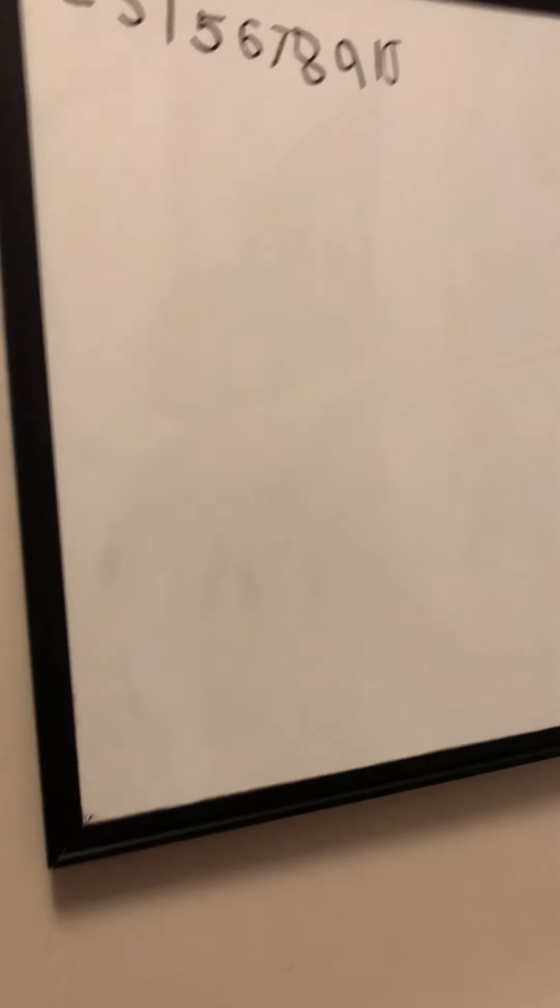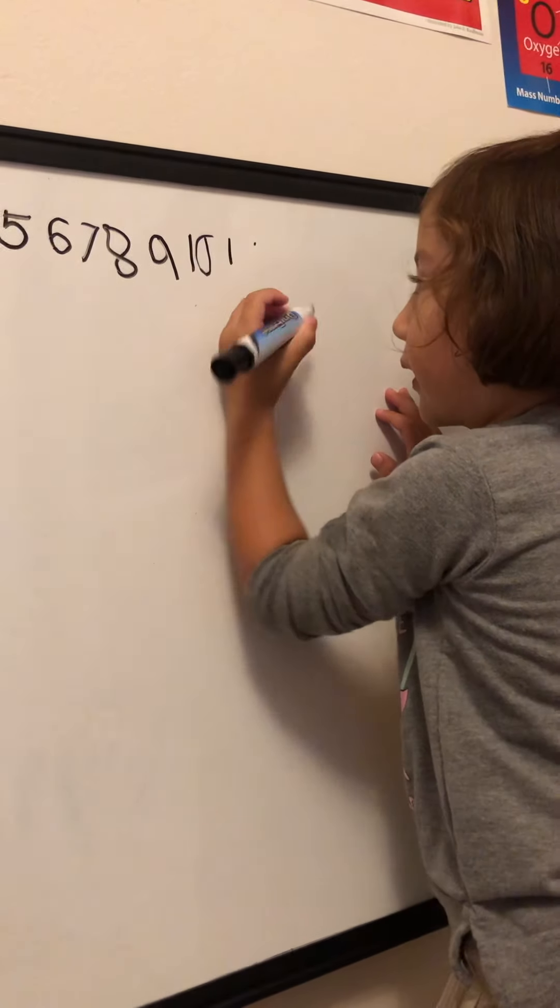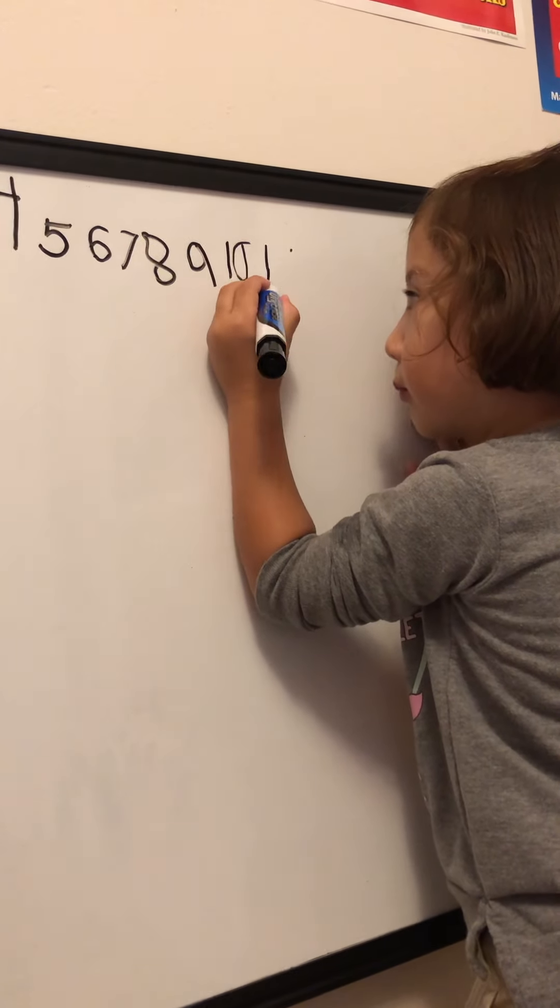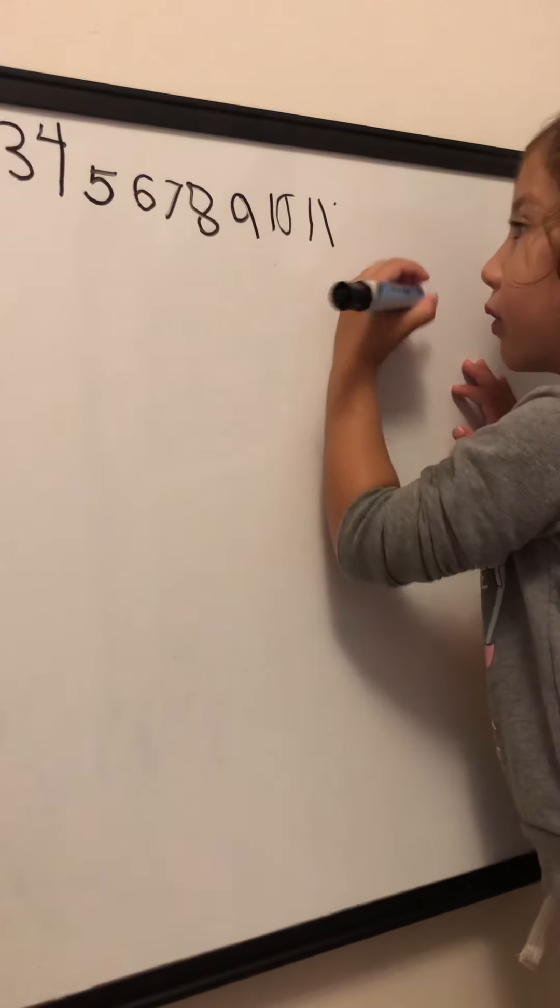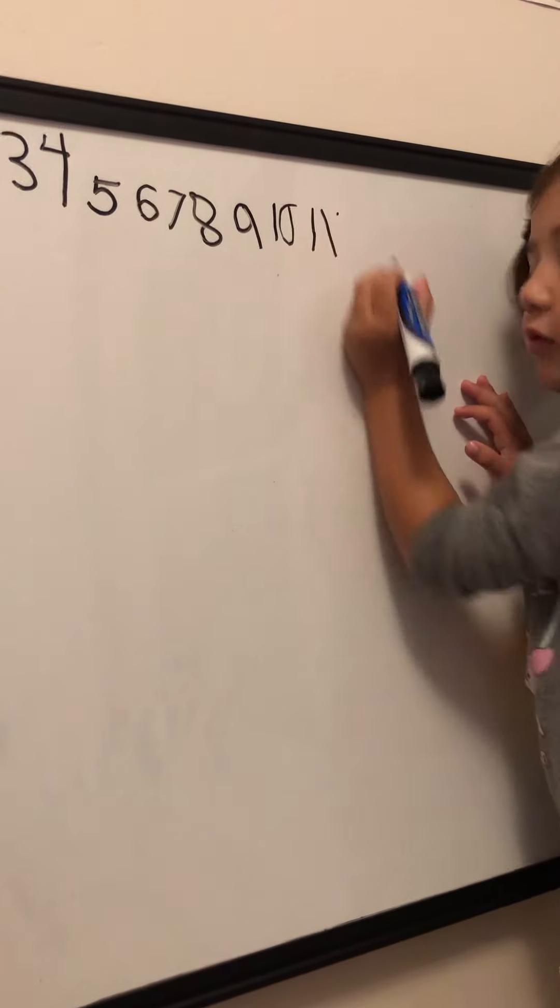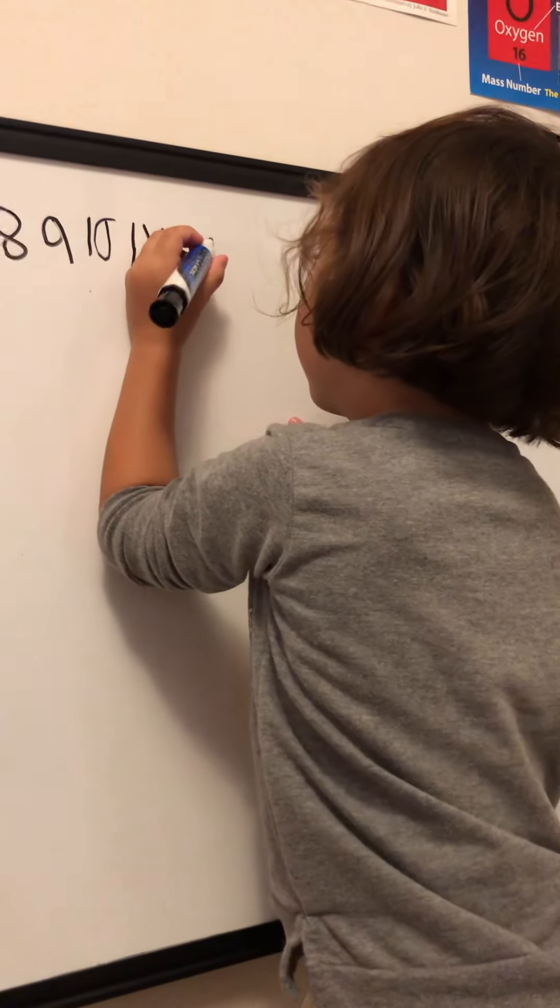How about eleven? Give us space, please. Remember, we have to give us space. I want to worry this. Okay, that's fine. Okay, what's next? Eleven, twelve. Yes. One, twelve.